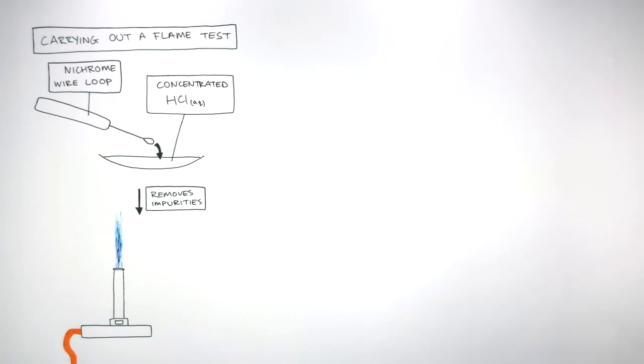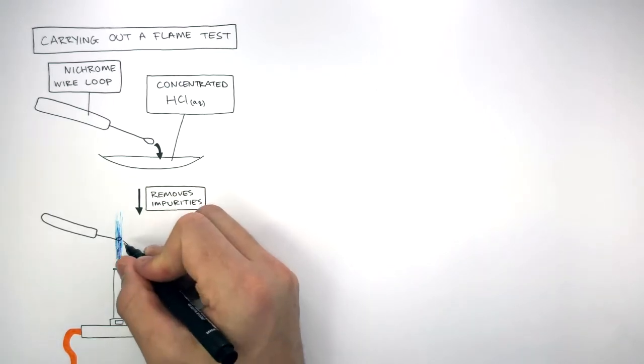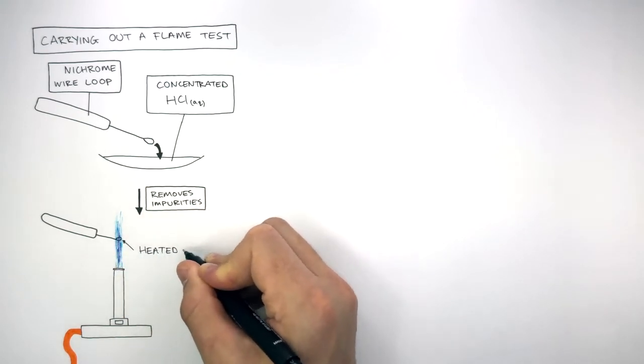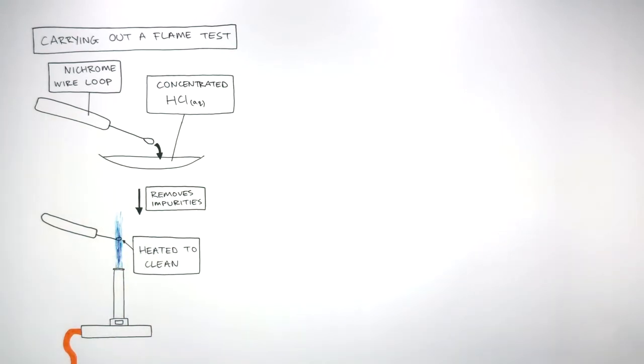Next, a Bunsen burner is used where the nichrome wire loop is placed inside the blue flame and it is heated to clean the nichrome wire loop.